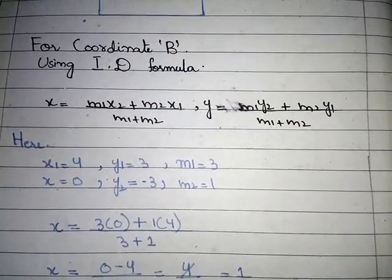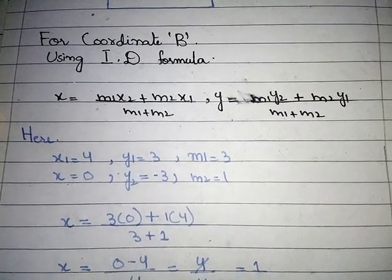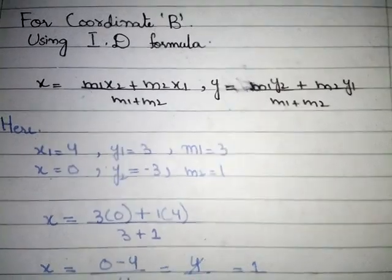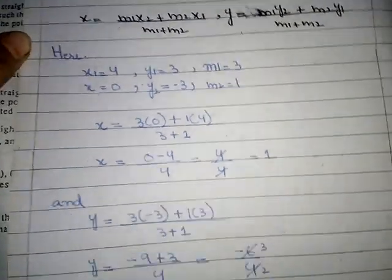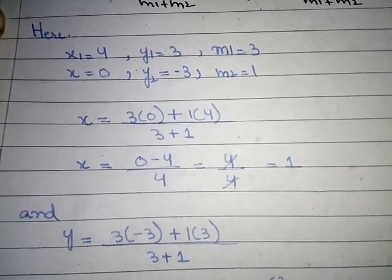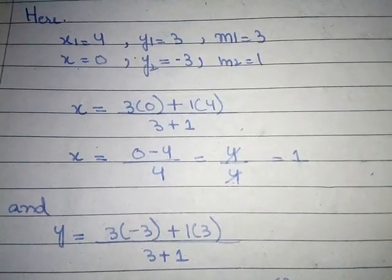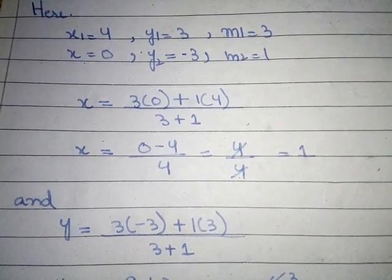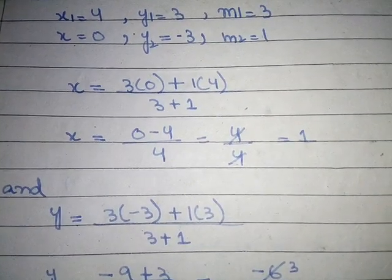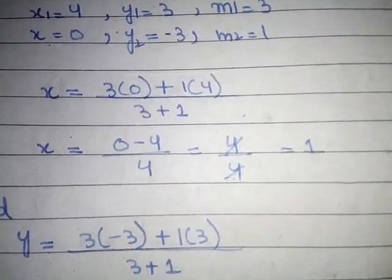For coordinate B, we use the section formula (ID formula), not the midpoint formula. x = (m1·x2 + m2·x1)/(m1 + m2) and y = (m1·y2 + m2·y1)/(m1 + m2). Here x1 = 4, y1 = 3, m1 = 3, x2 = 0, y2 = -3, m2 = 1. Putting values: x = (3·0 + 1·4)/(3 + 1).